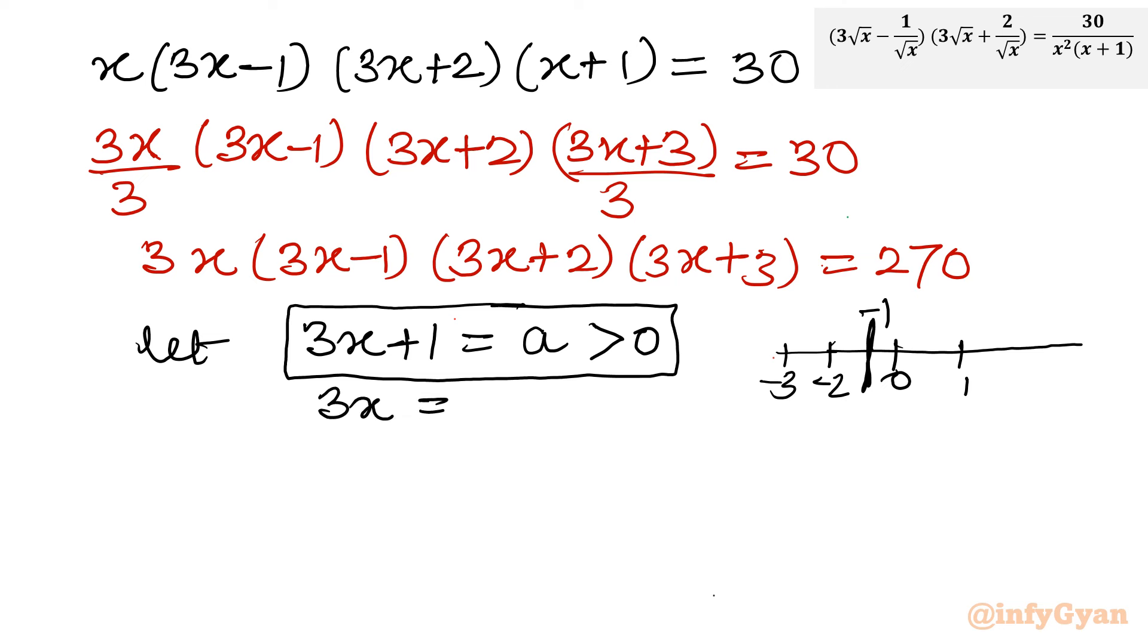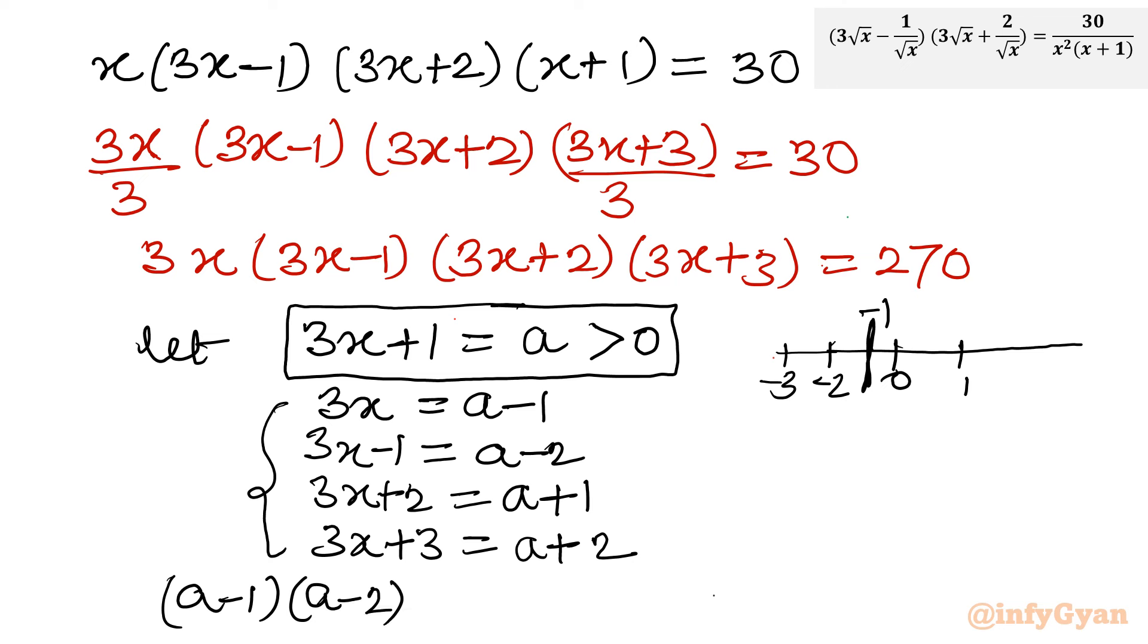We will exempt those values of a which are coming out negative. So let us frame now. 3x will become a-1, 3x-1 will become a-2, 3x+2 will become a+1, and 3x+3 will become a+2. Now if I substitute these values: (a-1)(a-2)(a+1)(a+2) = 270.